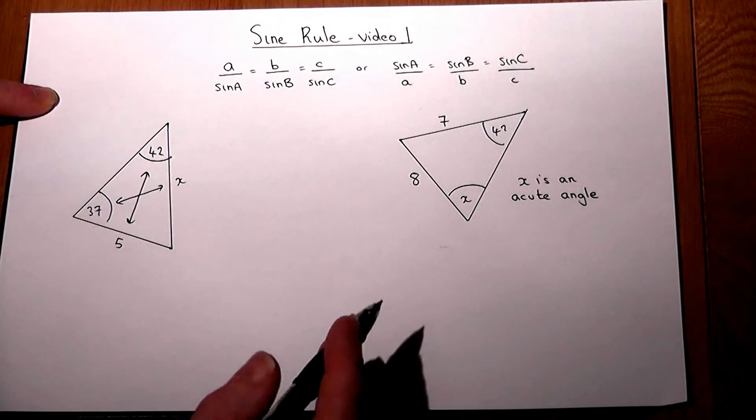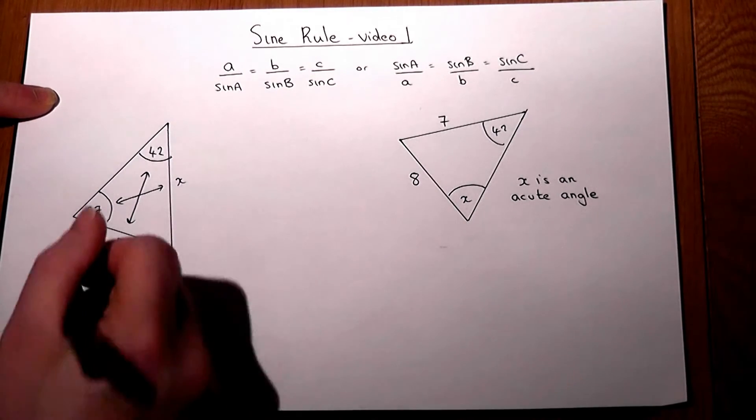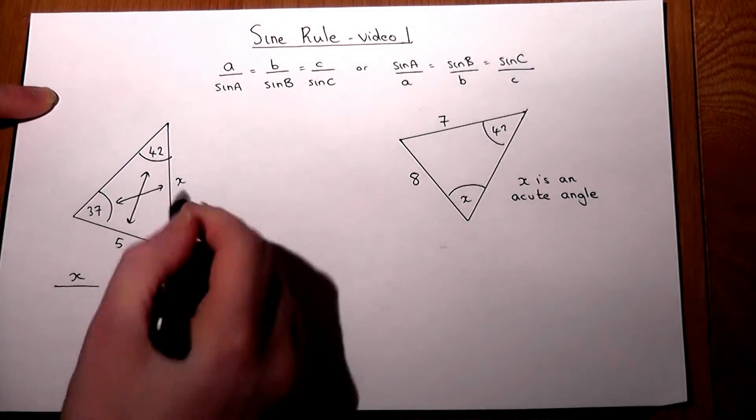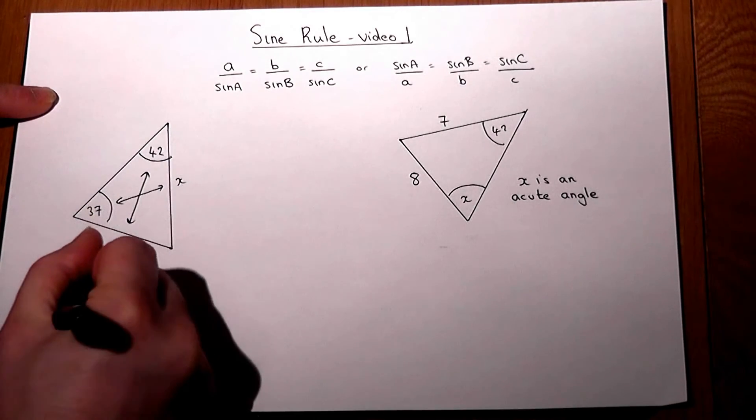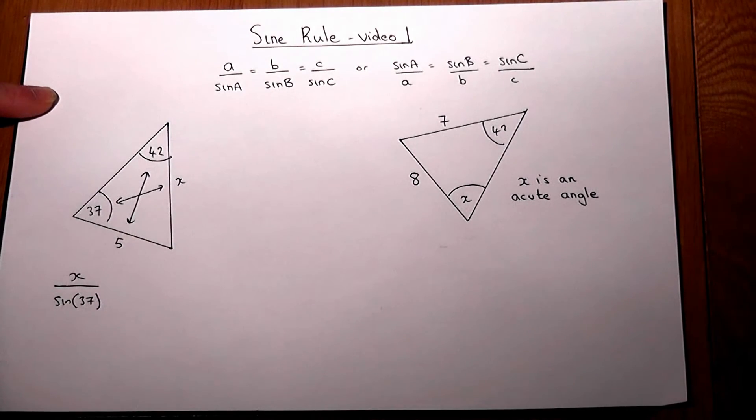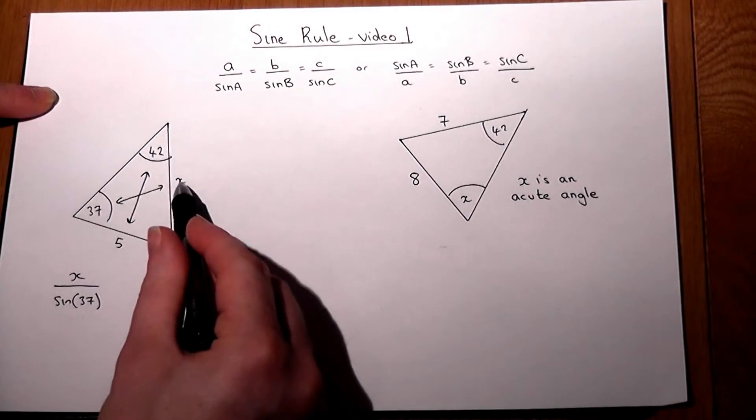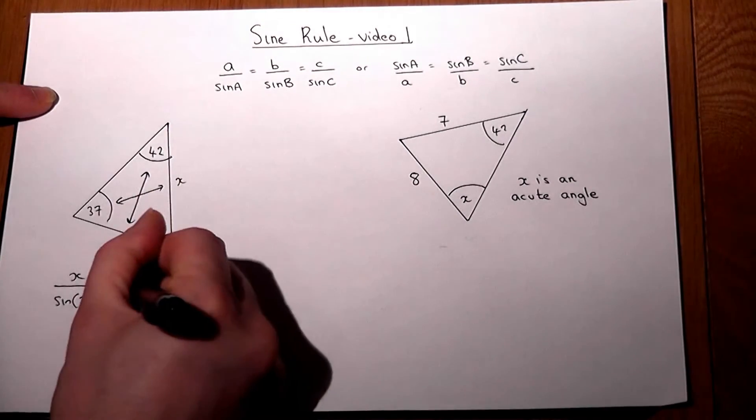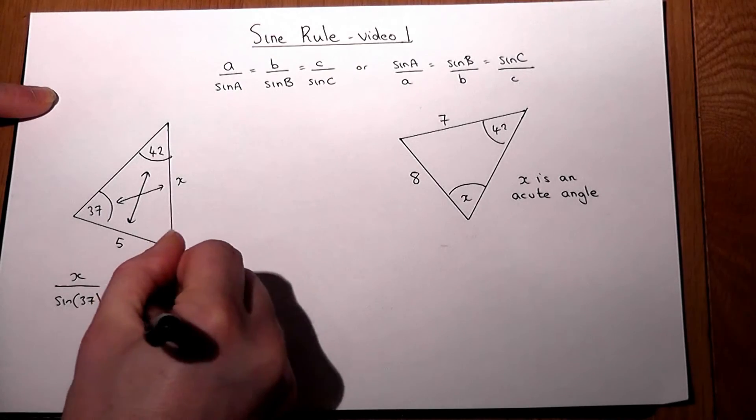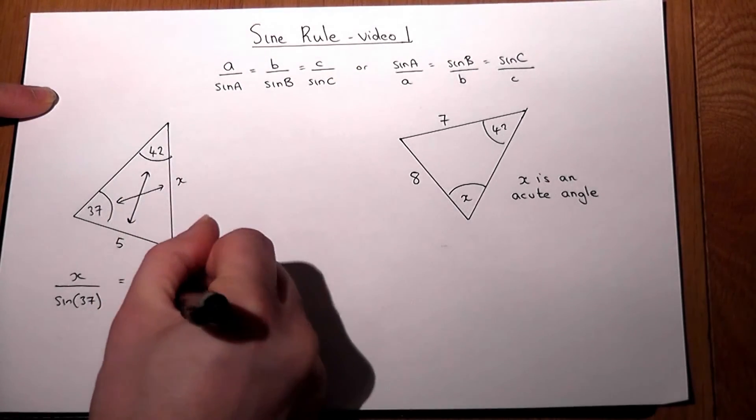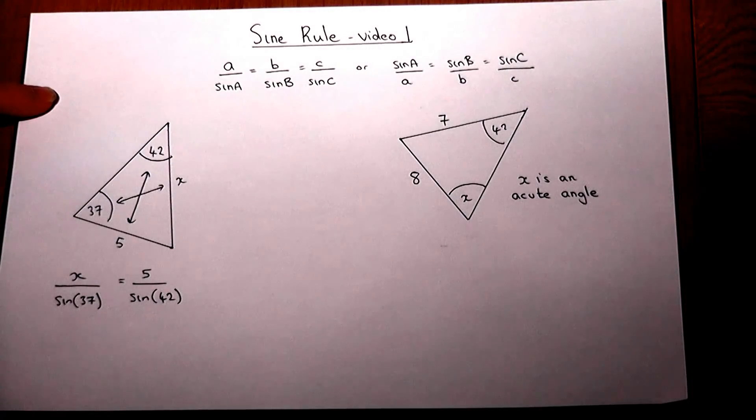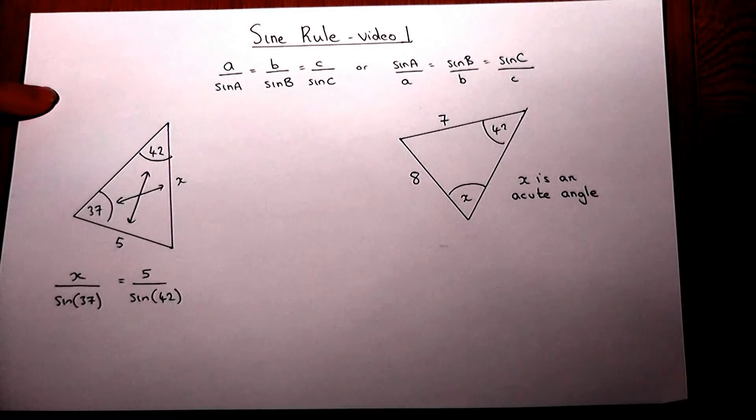To find X, we write down X over sine of the opposite angle. What the sine rule tells us is that X over sine 37 will equal the other side over sine of its opposite angle. So this gives us an equation to use to find X.